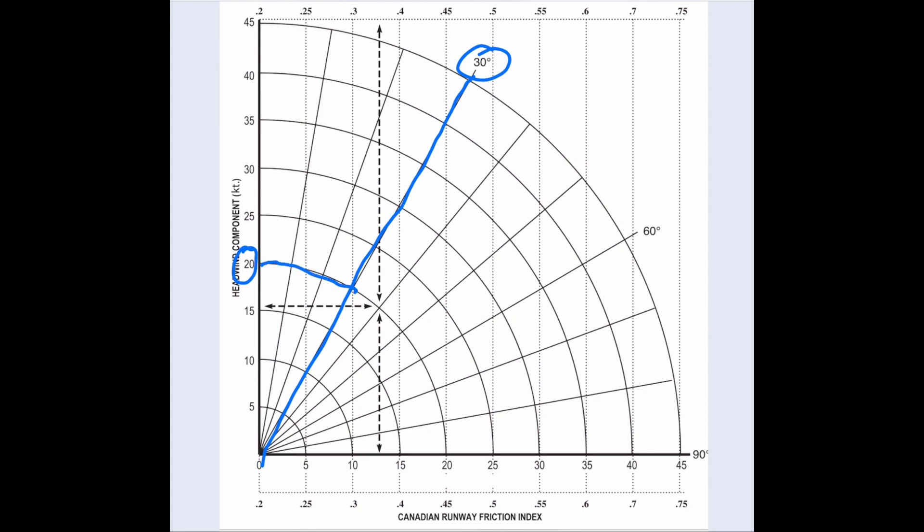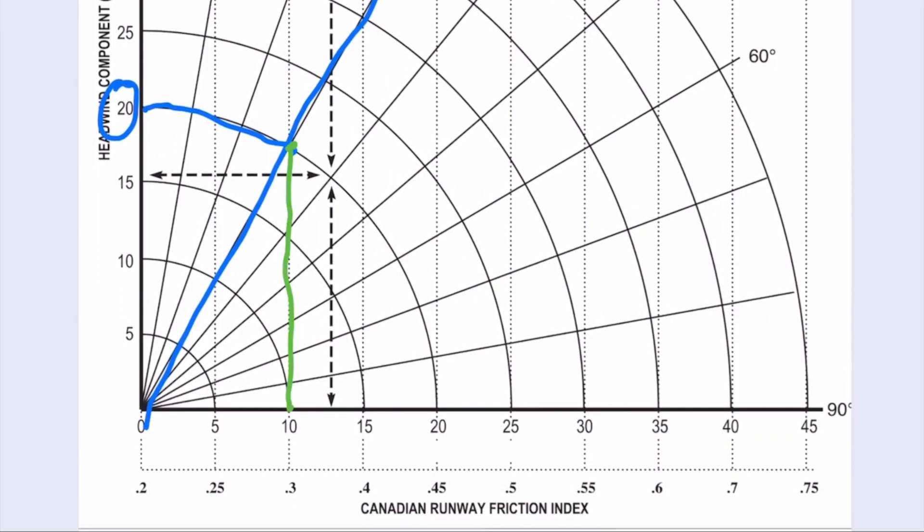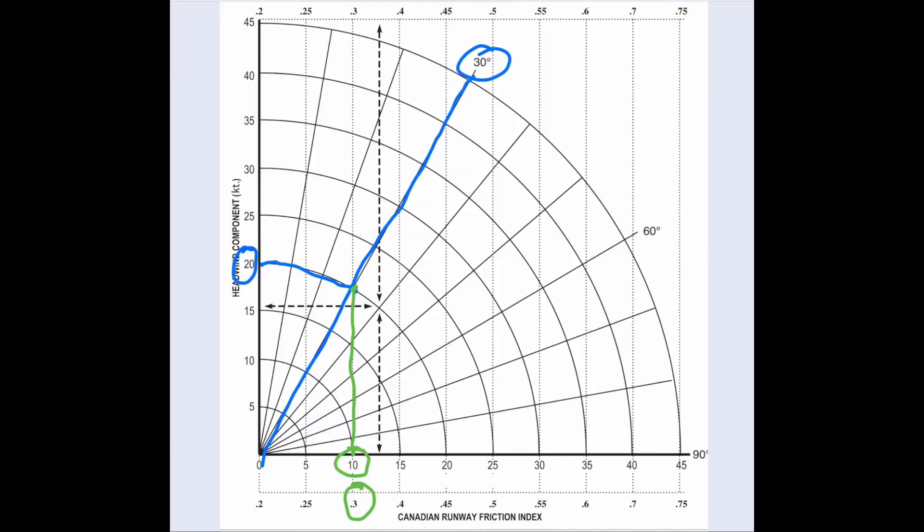Now all you have to do is draw a vertical line down to the bottom of the chart. So let's draw this line down. We come up with a crosswind of 10 knots, but also the minimum CRFI we need to safely land on this runway is going to be 0.3. Ideally you have even more than that because 0.3 is not a lot.